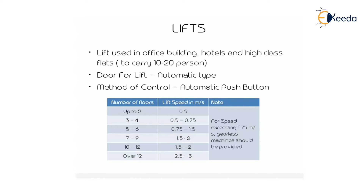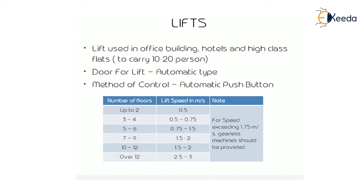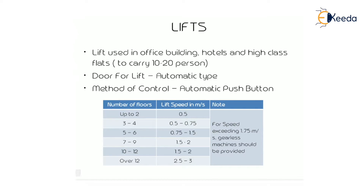A lift used in office buildings, hotels, and high-class flats carries 10 to 20 persons. The door is automatic type and the control is automatic push button. Speed varies by number of floors: up to 2 floors — 0.5m/s; 3 to 4 floors — 0.5 to 0.75m/s; 5 to 6 floors — 0.75 to 1.5m/s; 7 to 9 floors — 1.5 to 2.0m/s; over 12 floors — 2.5 to 3.0m/s. Note: for speeds exceeding 1.75m/s, a gearless machine should be provided.